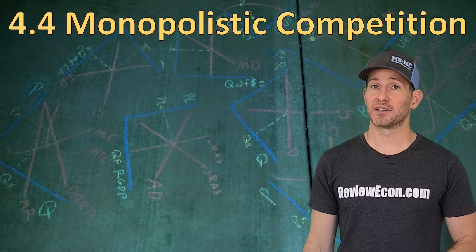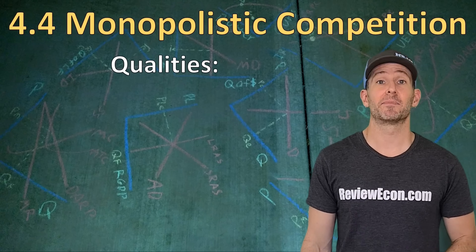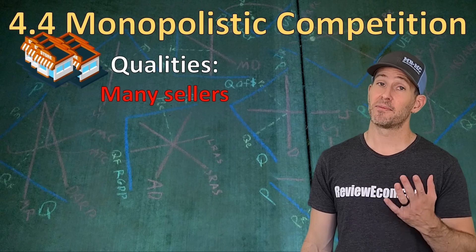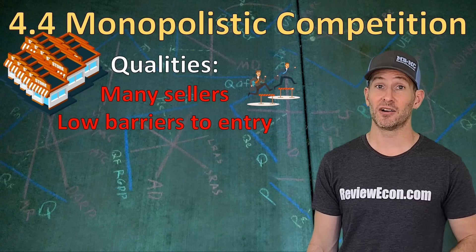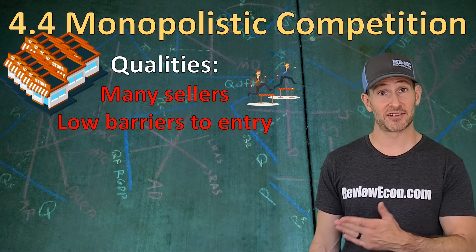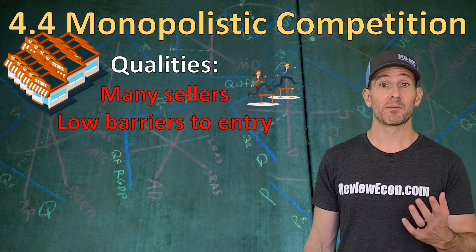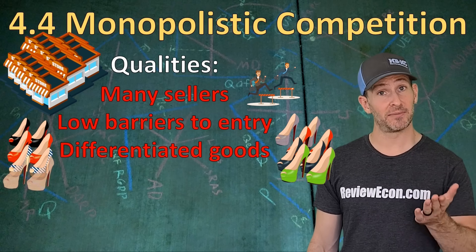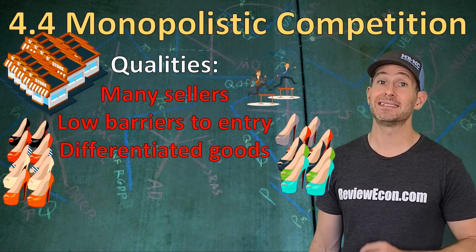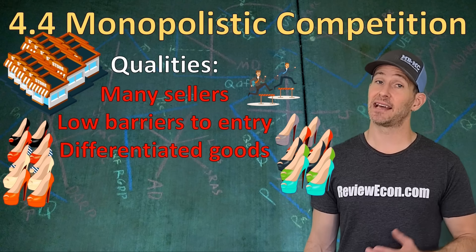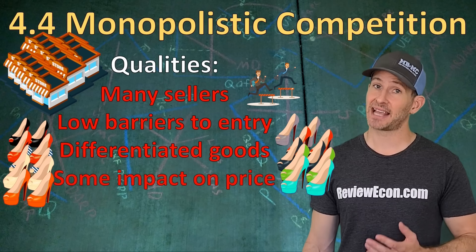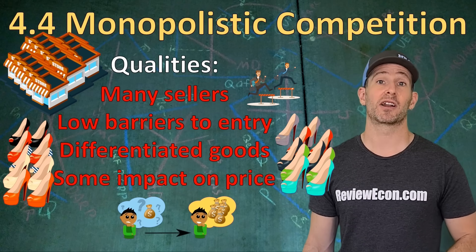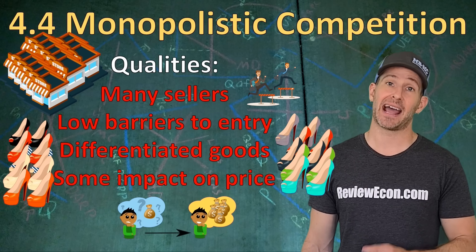Now we're moving on to monopolistic competition. Monopolistically competitive markets have many, many sellers. The barriers to entry are quite low, so firms can enter and exit the market. Products are differentiated — they are similar and substitutable, but different. These firms can have some influence on price through product differentiation and advertising.